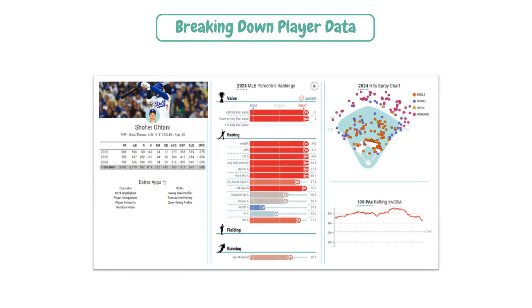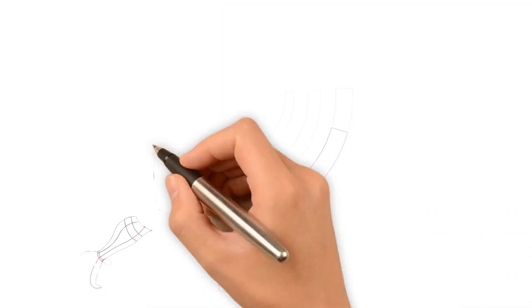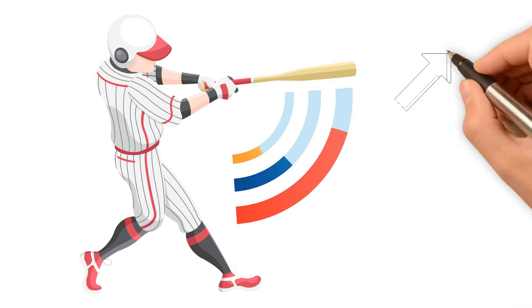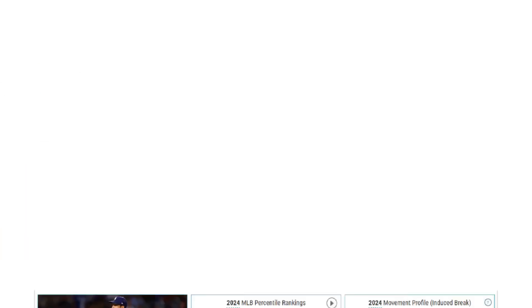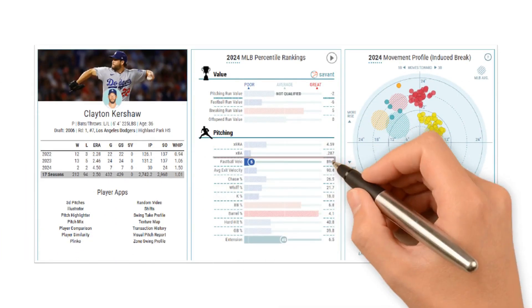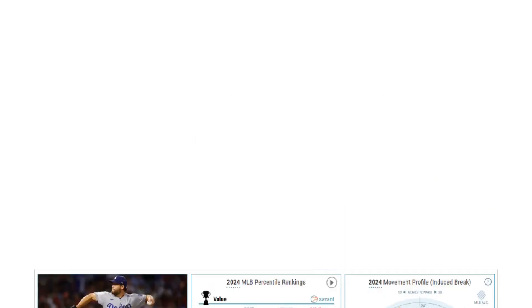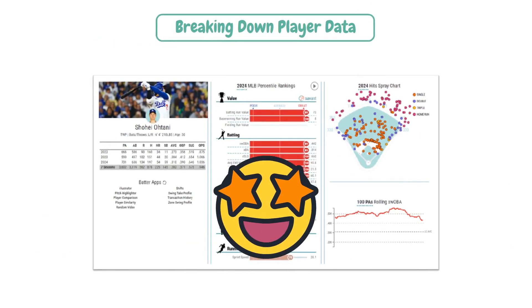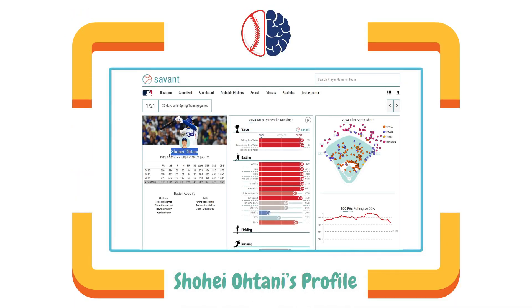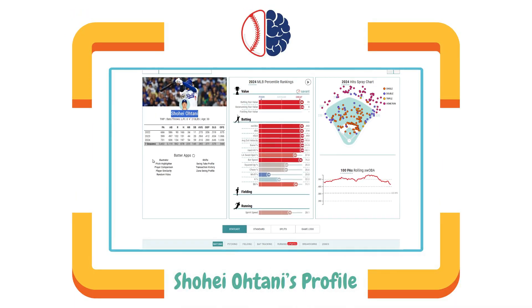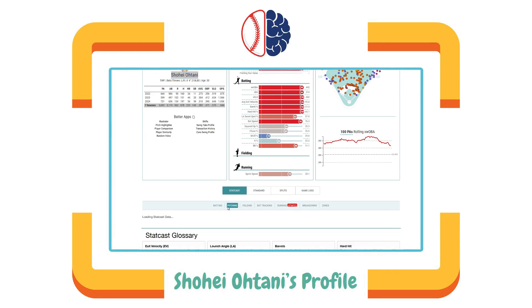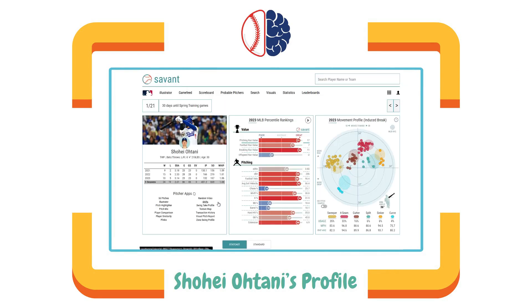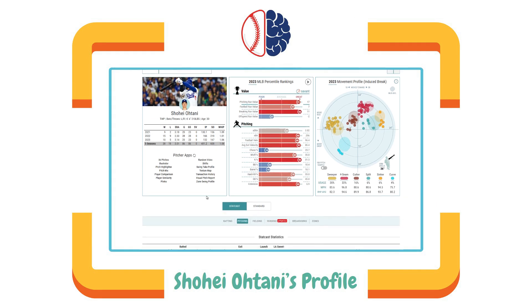Breaking down player data — Baseball Savant's player pages are my favorite section on the whole website. You can do a deep dive into an individual player's stats and see how they've changed over time, whether you want to see how Kershaw has adapted his pitch usage as his fastball velocity has dropped over his career, or how your favorite hitter stacks up against the rest of the league. Let's analyze Shohei Ohtani's profile as an example. The first thing you'll notice is that his page can be toggled from hitter to pitcher, since he plays both sides of the ball — obviously not typical, but a great example to see the differences and similarities between the two dashboards.